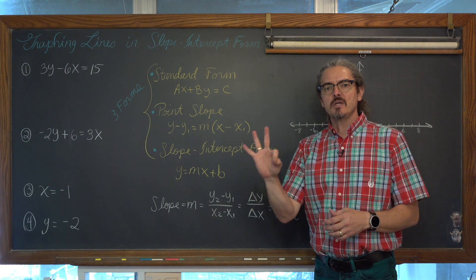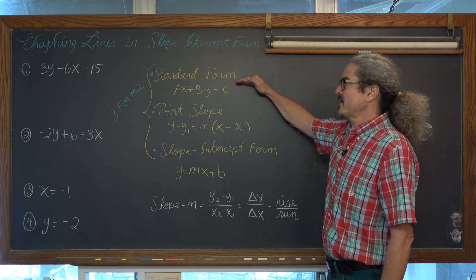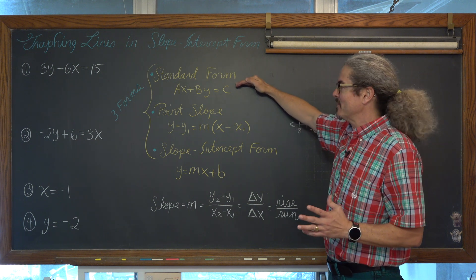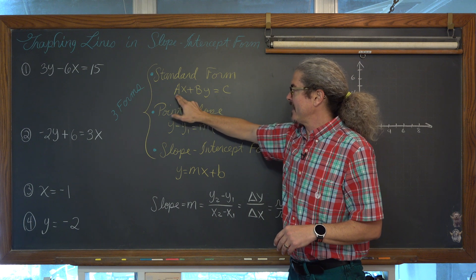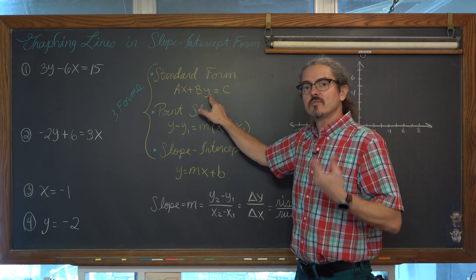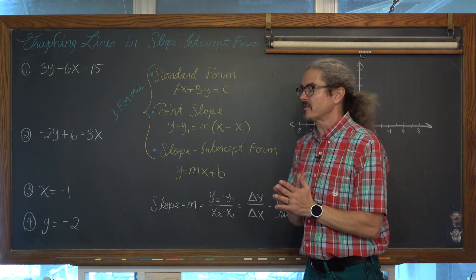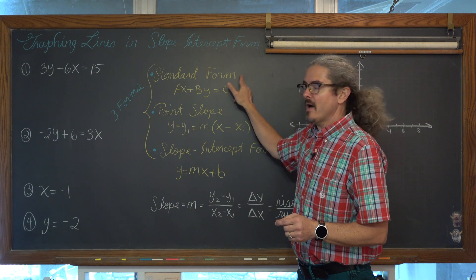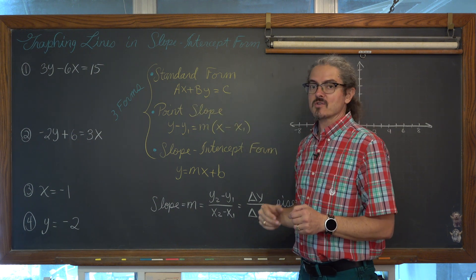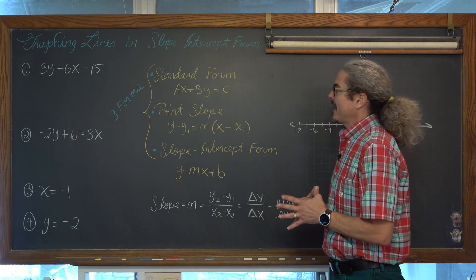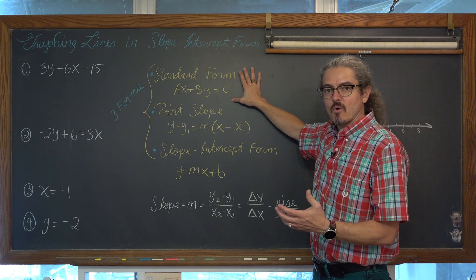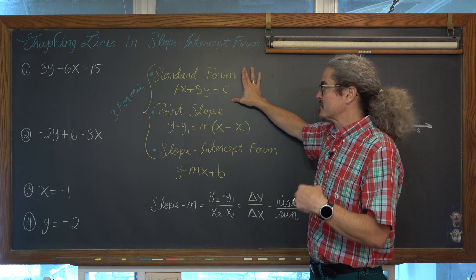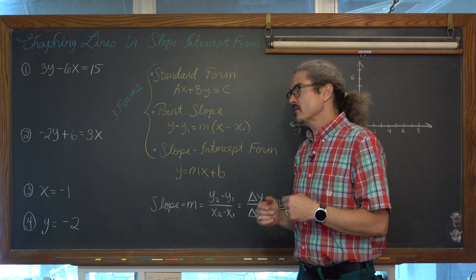You're probably going to be learning about three different forms for the equation of a line. We've got standard form — I'm a math teacher and I know what it is and it's got its place, but I don't use standard form very much. Standard form is ax plus by is equal to c. The coefficients a, b, and c cannot be decimals or fractions — they are going to be integers. If I have an equation in standard form and I'm going to graph that line, I'll find the x-intercept by letting y equal zero and the y-intercept by letting x equal zero.